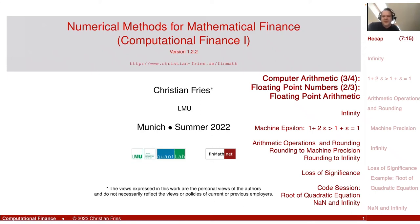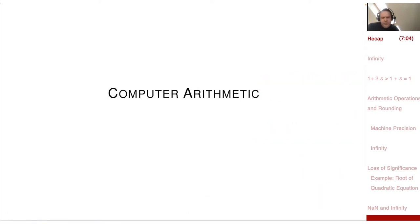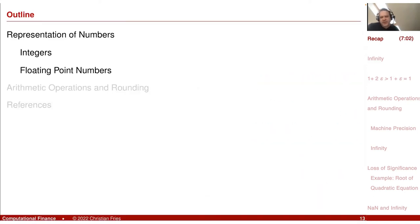Welcome to another session of numerical matters for mathematical finance. We started a session on computer arithmetic, first introduced the integers, then started introducing the floating point numbers. Let me shortly recall the definition of the floating point numbers and we will do more nice experiments related to the arithmetic operations on the floating point numbers.